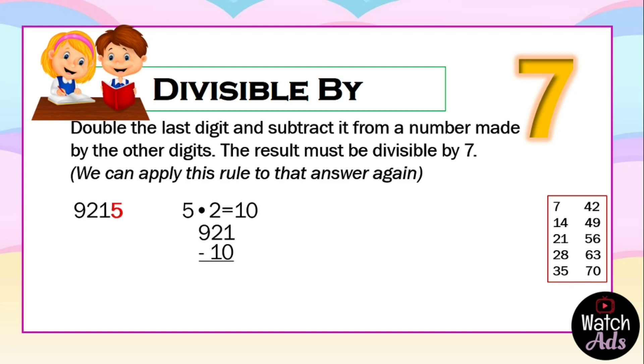921 less 10 is equal to 911. Then repeat the same procedure. We double the last digit, which is 1, multiplied by 2 is equal to 2. Then the remaining digits are 91. 91 less 2 is equal to 89.